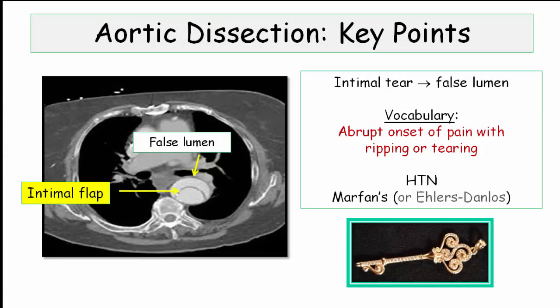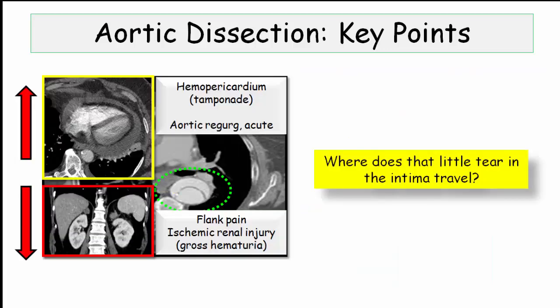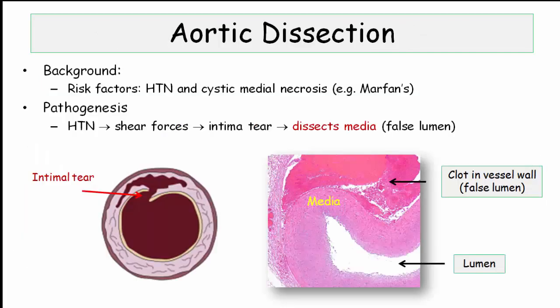They will then ask you a derivative, but you can't get the derivative unless you make the correct diagnosis. Insofar as demographics, you can expect the patient to be described as either hypertensive or to have clinical features of Marfan syndrome. Ehlers-Danlos can also be associated with dissection. One of the major derivatives of this topic is where the dissection travels and what it destroys along the way. If it propagates proximally to the aortic root, derivatives will focus on hemopericardium with tamponade and/or the acute onset of aortic regurgitation. If the dissection travels antegrade, any branch vessel may be affected, but the renal arteries are a particular favorite of the NBME.